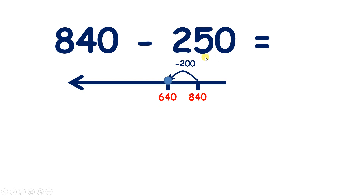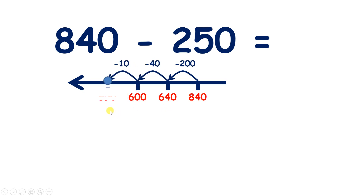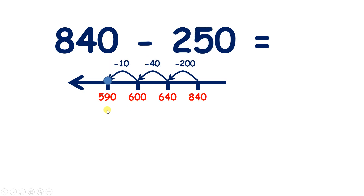Now we need to subtract five 10s. If we subtract four 10s, that takes us to 600, and then another 10 leaves us with 590. So we subtracted four 10s, then one 10, so we subtracted five 10s altogether, and that gives us our answer 590.